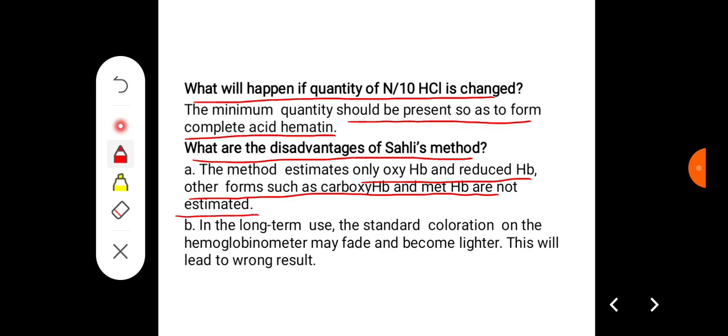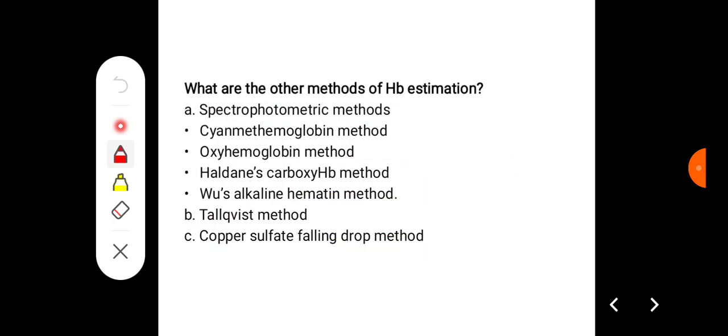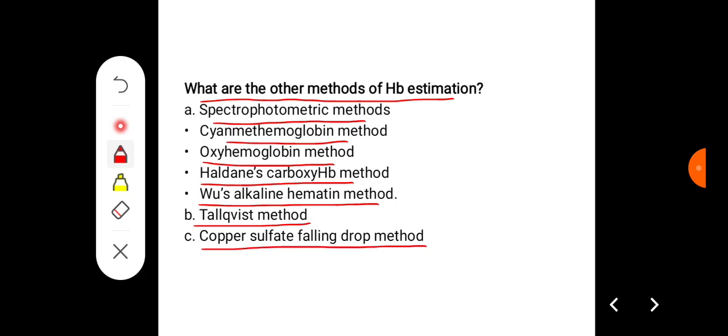Second: in long term, the standard coloration on the hemoglobin meter may fade and become lighter. This will lead to wrong results. What are the other methods of hemoglobin estimation? There can be spectrophotometric methods like cyanmethemoglobin method, oxyhemoglobin method, Haldane's carboxyhemoglobin method, Sahli's alkaline hematin method, and there can be Tallqvist method and copper sulfate falling drop method.